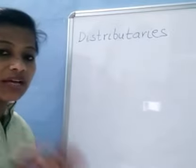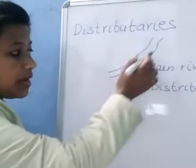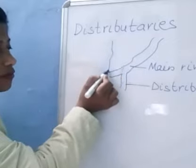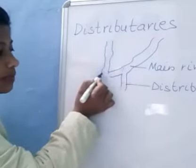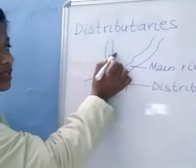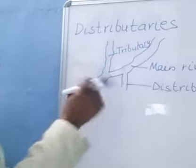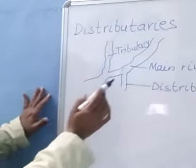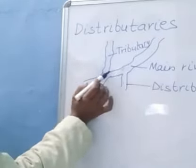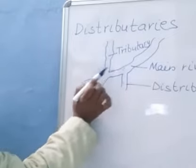The meaning of distributary: when a large main river splits, the branch flowing away is called a distributary. If another river joins the main river, that joining river is called a tributary. A tributary is a smaller river or stream that joins a larger river. That is the difference between tributary and distributary.